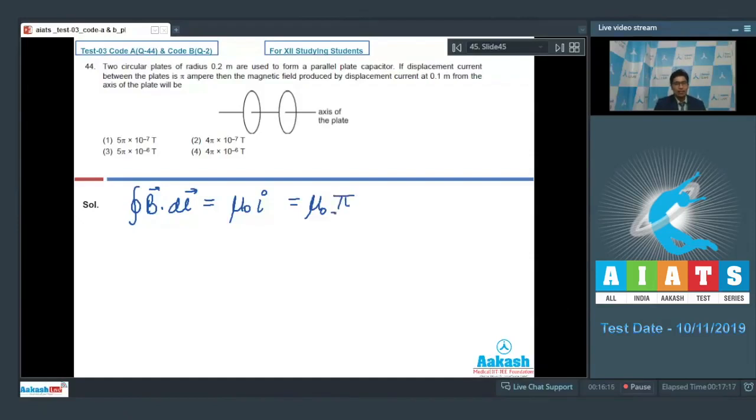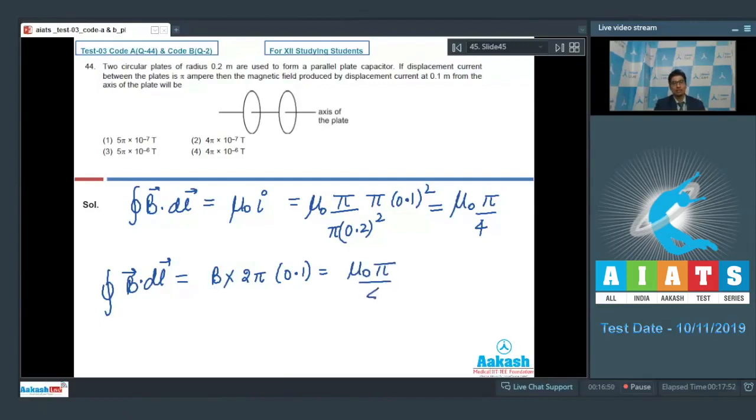Because π amperes is in 0.2 meter radius, we use simple unitary method to find the enclosed current in the radius of 0.1 meter. Therefore the right-hand side becomes μ0·π÷4. The value of B·dl integral would be B×2πr where r is 0.1. On equating this with the right-hand side, the π gets cancelled and B turns out to be μ0÷0.8 or 5μ0÷4.